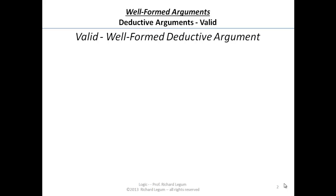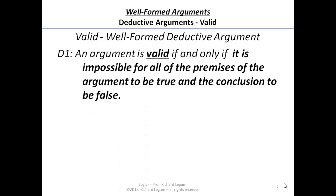Remember, we said deductive arguments that are valid — where the logic is good — are conclusive. Precisely, we can define it this way: an argument is valid if and only if it is impossible for all the premises of the argument to be true and the conclusion false.